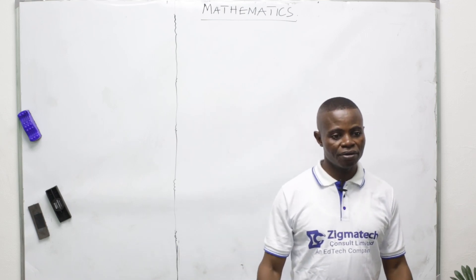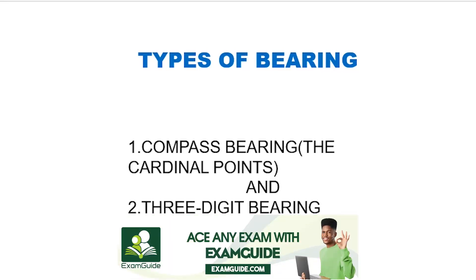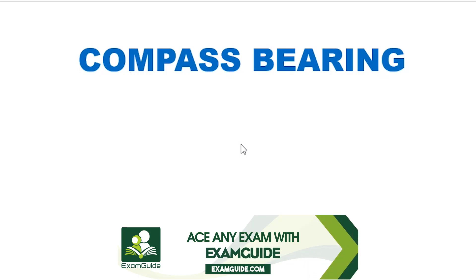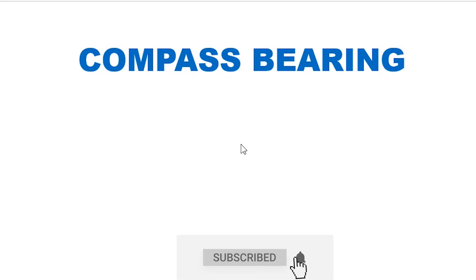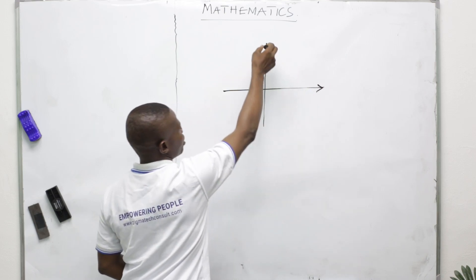Types of bearing: we have the compass bearing, called the cardinal point, and the three-digit bearing. Talking about the compass bearing, we are recalling the cardinal points. As the name implies, compass bearing or cardinal points bearing, like you have seen in the short video we watched before the explanation of this topic.